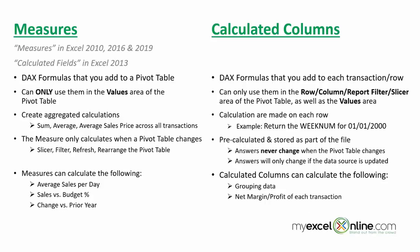Now we're explaining the differences between Measures and Calculated Columns. First of all, Measures — the name was seen in Excel 2010. In Excel 2013 it changed to Calculated Fields, but in Excel 2016 it went back to Measures and it's there now. These are the DAX formulas that you add into a pivot table, so they're only available inside a pivot table.